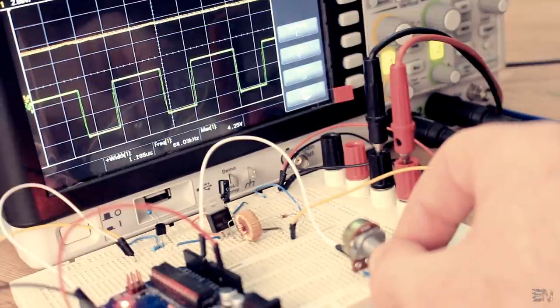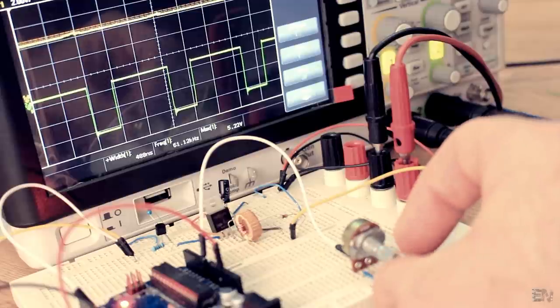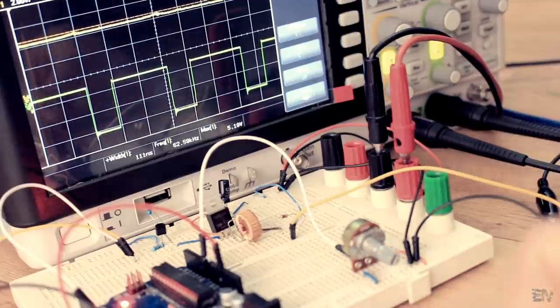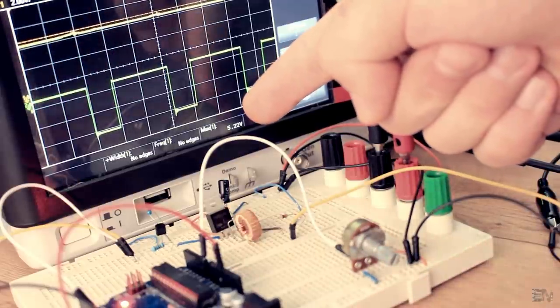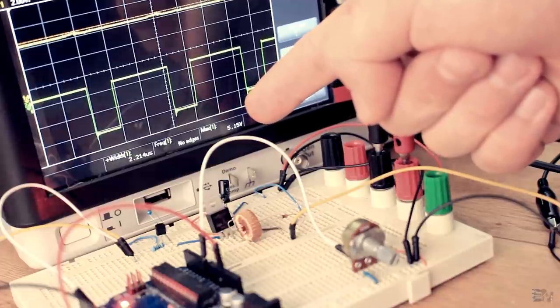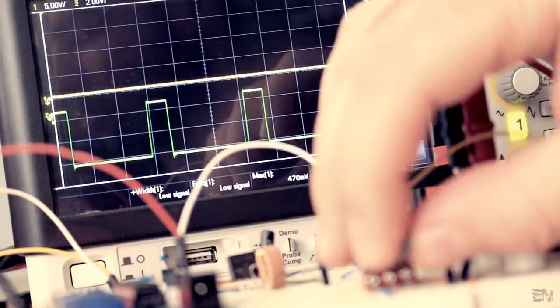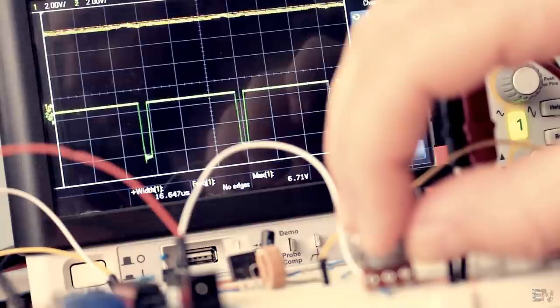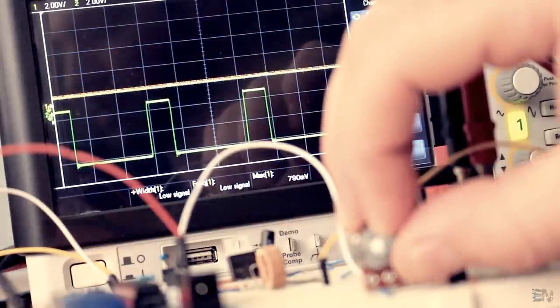In this case, the green line on the oscilloscope is the PWM switch signal and the yellow one is the output. As you can see, if I increase the duty cycle, the output will increase as well. But if I lower the duty cycle, the output will get lower.